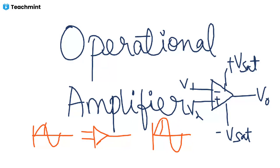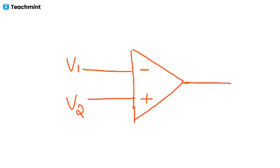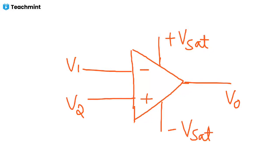This is the main part of the operational amplifier. The op-amp is represented by a triangle symbol. The two inputs are V1 and V2, and the output is V0. The supply connections provide plus V saturation and minus V saturation voltages.